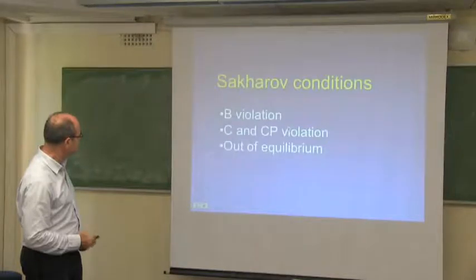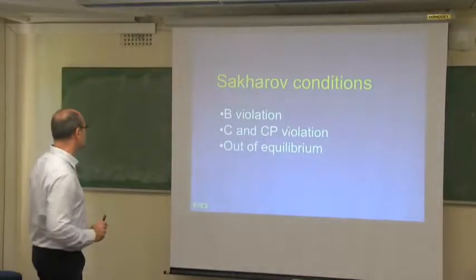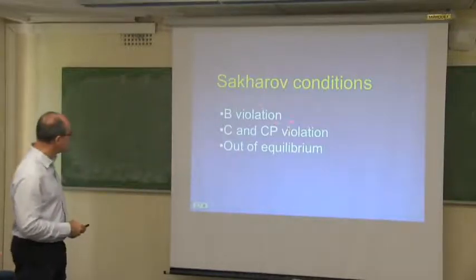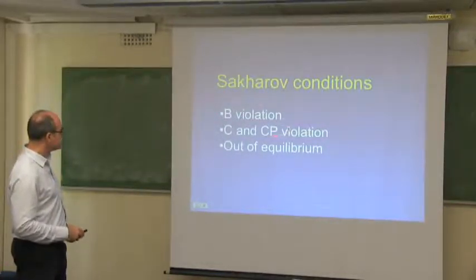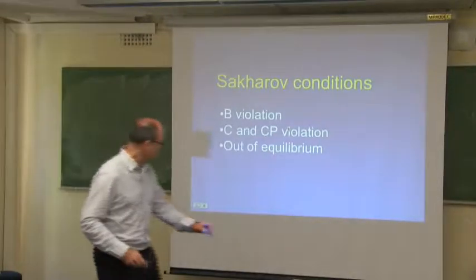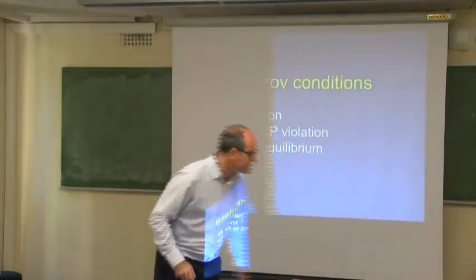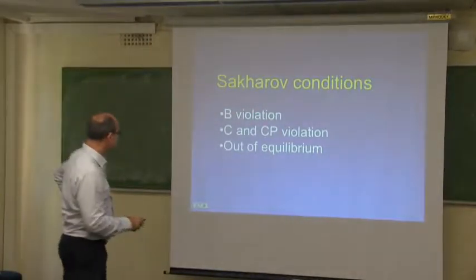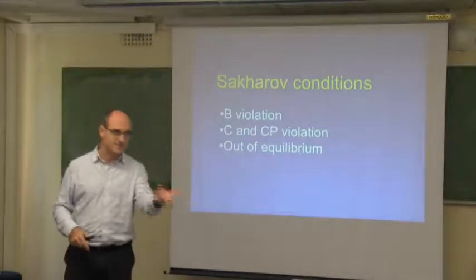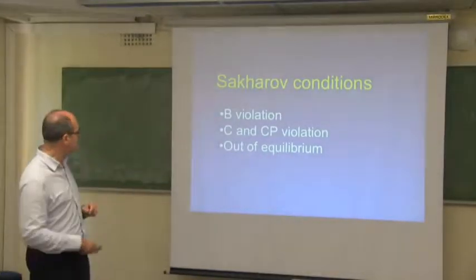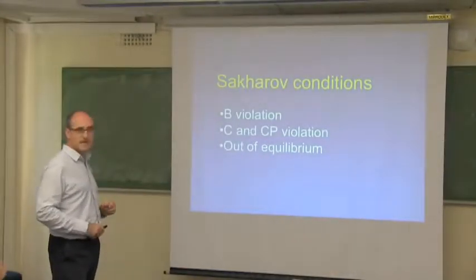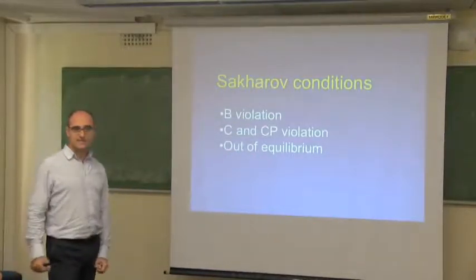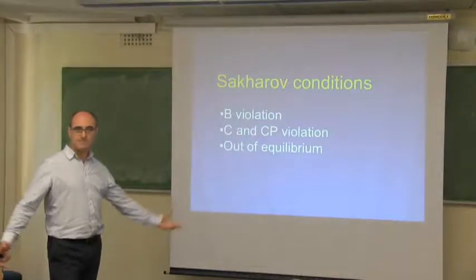One of the conditions required to produce baryon asymmetry — we all know — in 1967, Sakharov realized that we need baryon violation, C and CP violation, and we need to be out of equilibrium. Baryon violation is already within the standard model. C and CP violation, through the CKM matrix, has a certain amplitude — probably not enough to produce sufficient baryogenesis in the thermal case. The out-of-equilibrium condition is not satisfied in the electroweak theory simply because the electroweak transition is a crossover.